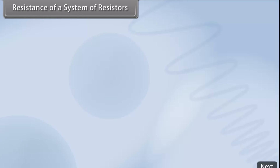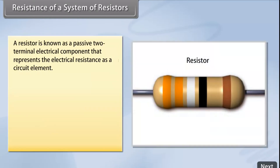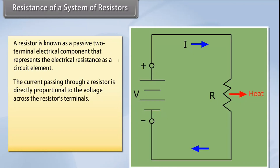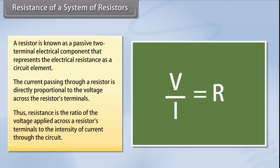A resistor is a passive two-terminal electrical component that represents the electrical resistance as a circuit element. The current passing through a resistor is directly proportional to the voltage across the resistor's terminals. Thus, resistance is the ratio of the voltage applied across the resistor's terminals to the intensity of current through the circuit.